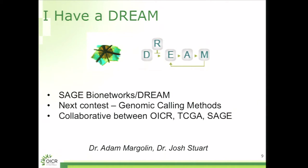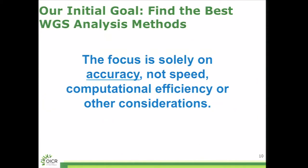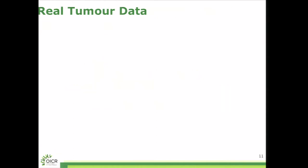To try to resolve this, we put together, and we as myself, Adam Margolin at Sage and Josh Stewart at UCSC, a challenge that would allow us to benchmark the methods for identifying somatic mutations in cancer. At the beginning we set out and said we only care about accuracy. This isn't about efficiency. This isn't about the most computational or parallelizable algorithm. We just want to know how well we can do.